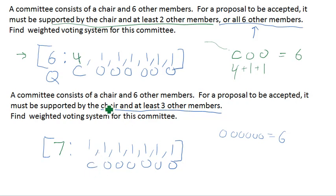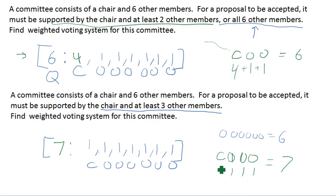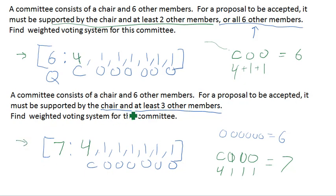In order for the chair and three other members to be able to reach quota of seven, with the other players already having weight one, we increase the weight of our chair member. If we increase the chair's weight to four, then four plus three equals seven, and the chair and any three other members will be able to reach quota. But the six other members by themselves will not. This is a weighted voting system that could represent this committee — not the only one, but probably the simplest.